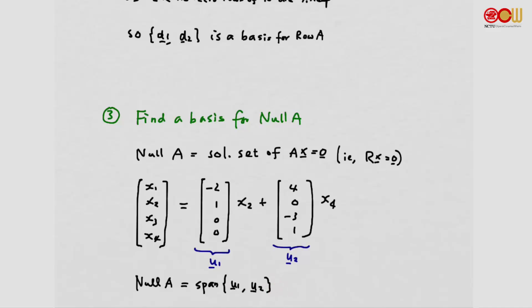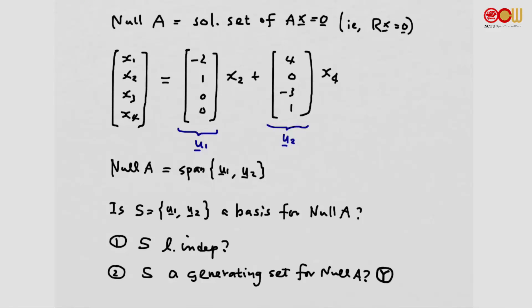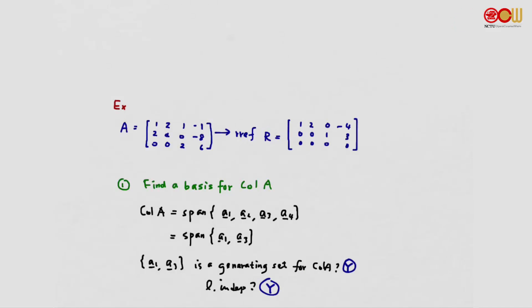We need to examine two properties: whether it's a generating set and whether it's linearly independent. We already know it's a generating set. It is also linearly independent, because the vectors in the vector form of the general solution are always linearly independent. So these vectors form a basis for the null space of A.